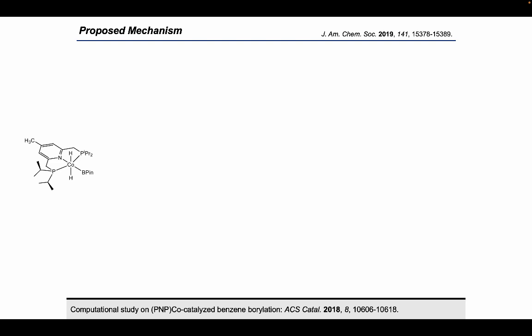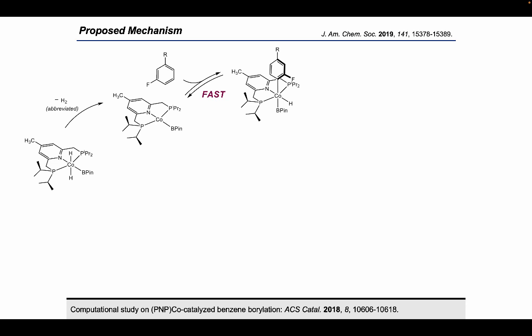A combination of kinetic studies, kinetic isotope effects, isotopic labeling, and resting state analysis culminated in this proposed mechanism. First, the dihydride boryl precatalyst reductively eliminates H2 to generate a cobalt-1 boryl. This can't occur directly in one step because the hydrides are trans to one another — it is instead a stepwise process that has been studied computationally. The resulting cobalt-1 boryl species then undergoes a fast and reversible C-H oxidative addition to generate a cobalt-3 intermediate bearing aryl, hydride, and boryl ligands. Note that the aryl and boryl ligands are trans to one another, so they can't directly reductively eliminate the expected aryl boronate product.